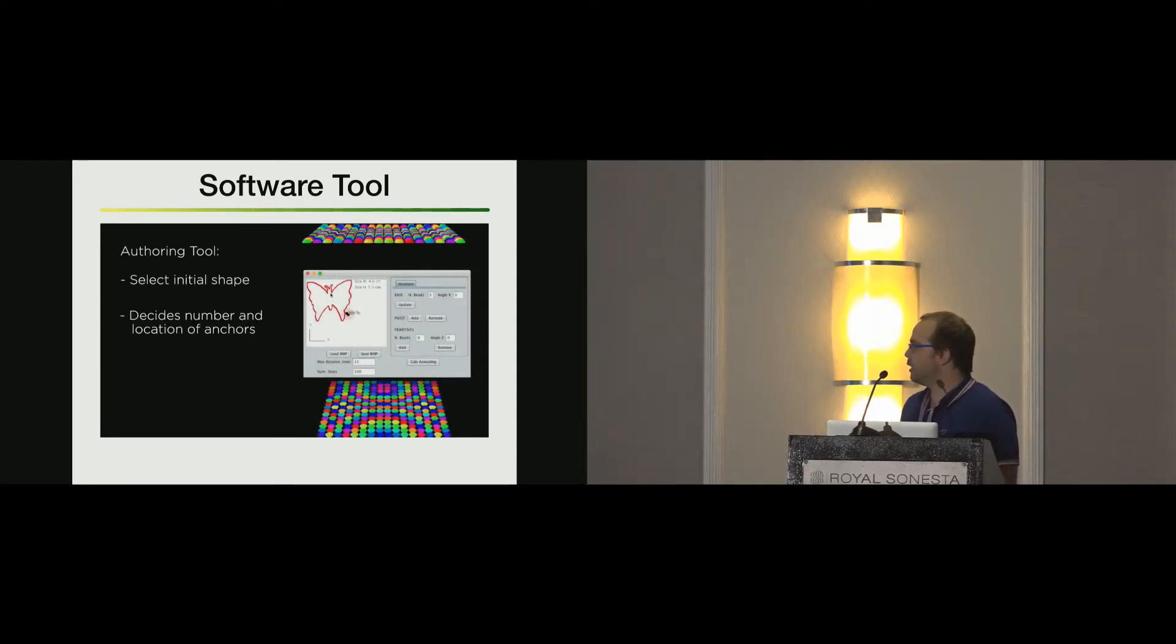This is basically what I said as an example with the software. So he selects the initial shape, decides the number and location of the anchors, the pivot, the primitive of the pivot, another pivot, and the primitive, and it calculates the best location.